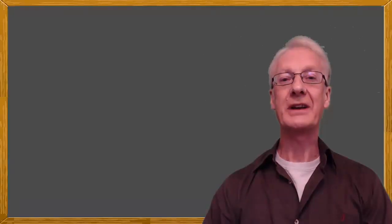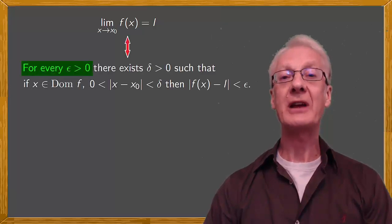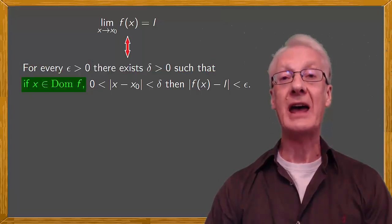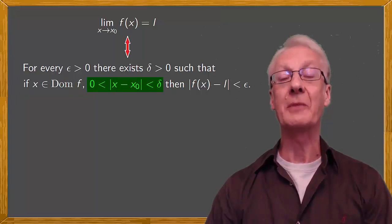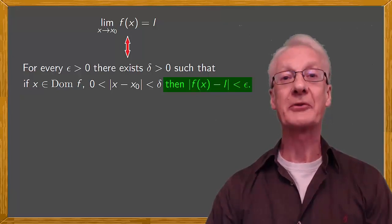The usual definition of a limit goes something like this. The limit when x tends to x0 of f(x) is L if for every epsilon greater than 0 there exists a delta greater than 0 such that if x belongs to the domain of f and 0 is less than the absolute value of x minus x0 and this is less than delta, then the absolute value of f(x) minus L is less than epsilon.